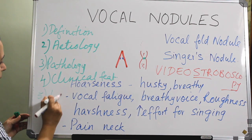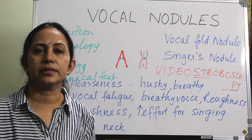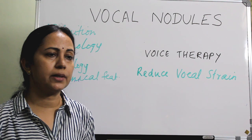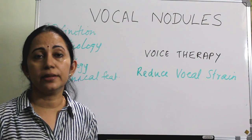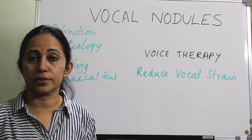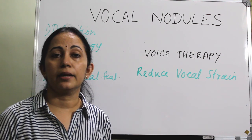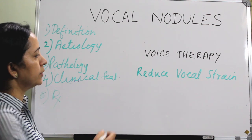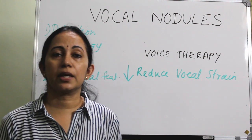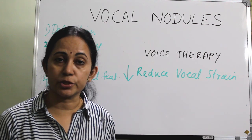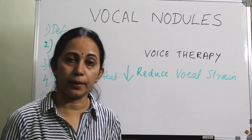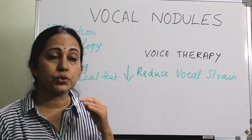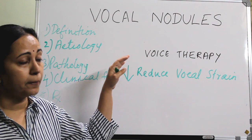The mainstay of treatment is voice therapy. As vocal nodules are more common in children and young adults, it is always better to start with voice therapy and also treat the precipitating factors such as allergy or gastroesophageal reflux disease, and ask the patient to modify their lifestyle. Voice therapy is mainly aimed at reducing vocal strain — any techniques that can reduce shouting, whispering, coughing, or repeated throat clearing can be employed, and the patient is encouraged to use a smooth, easy tone of voice.